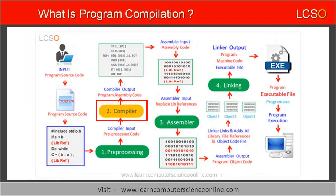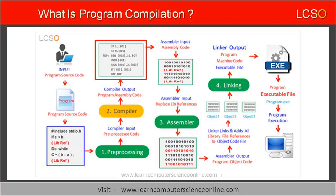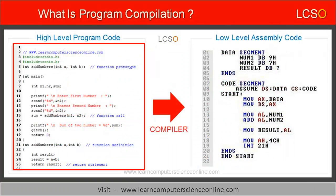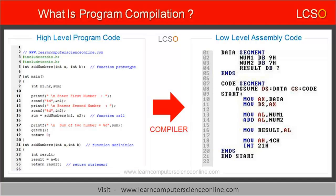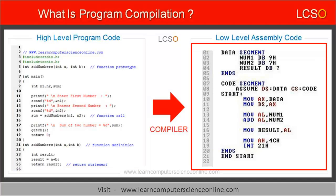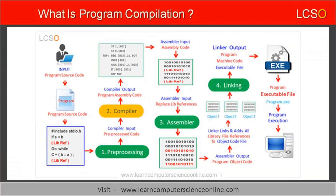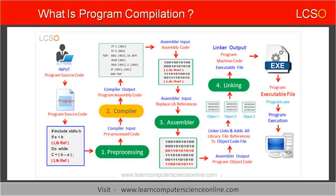Compilation is the second stage of the program compilation process. In this stage, the compiler accepts the pre-processed file as input and provides the assembly code as an output file with a .s extension. The compiler converts all high-level program instructions into their equivalent assembly code instructions. These instructions are platform-dependent and compiled for a specific architecture. Let us now move on to the next, third stage.